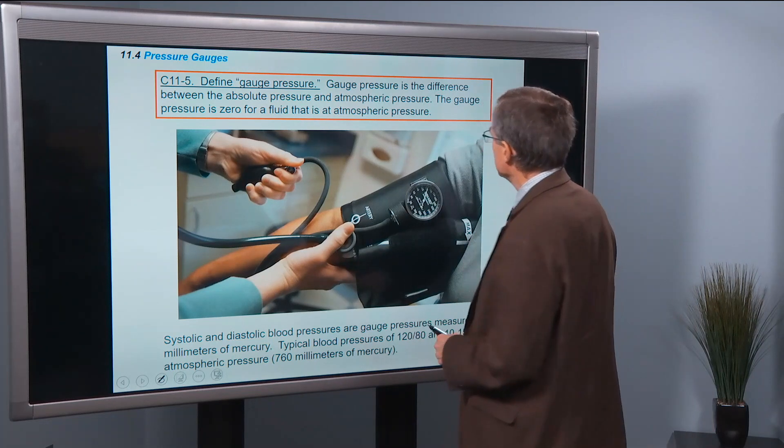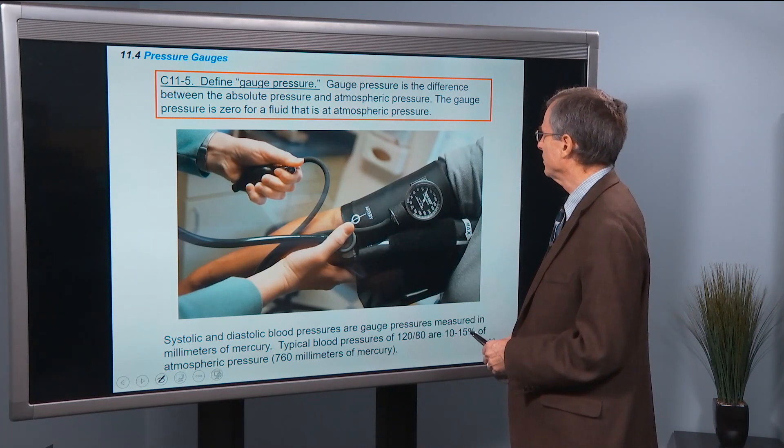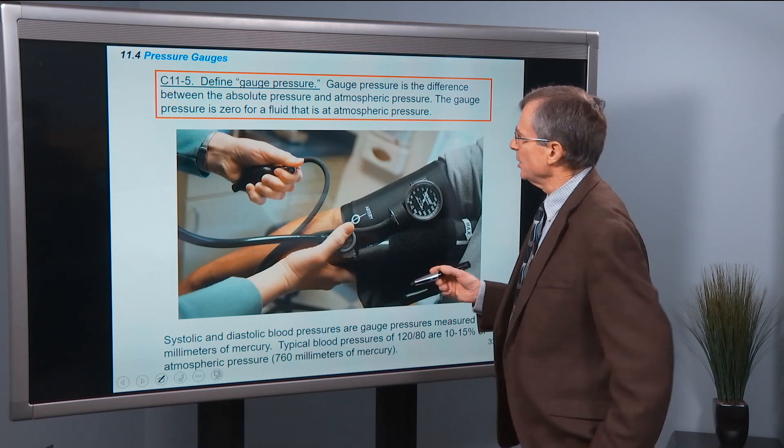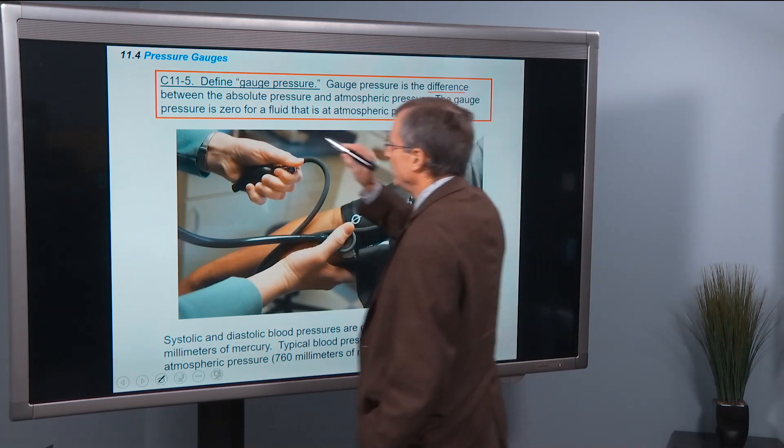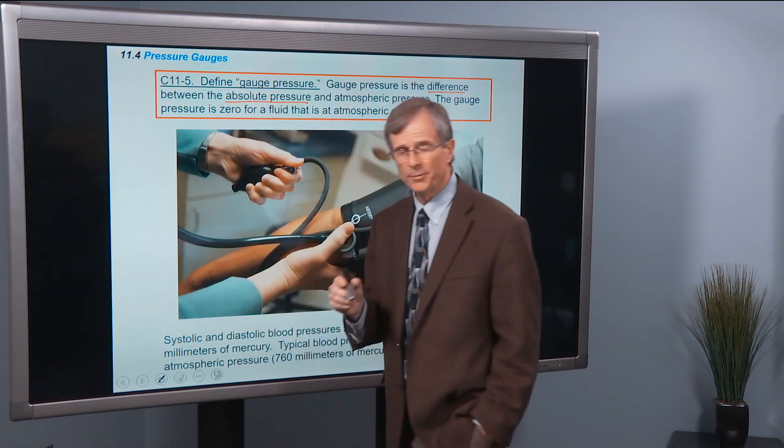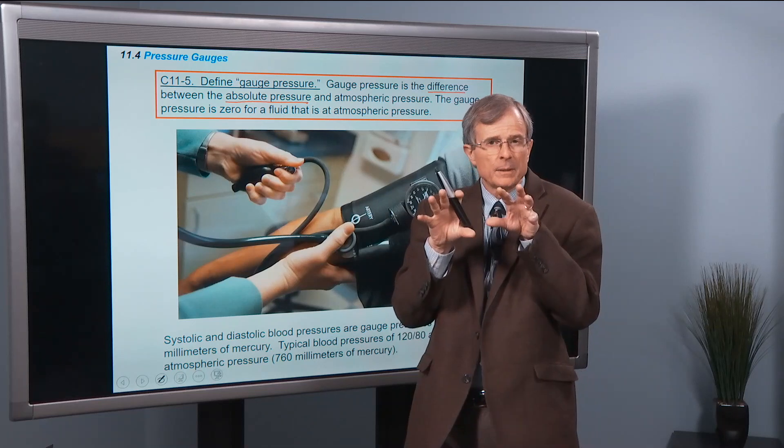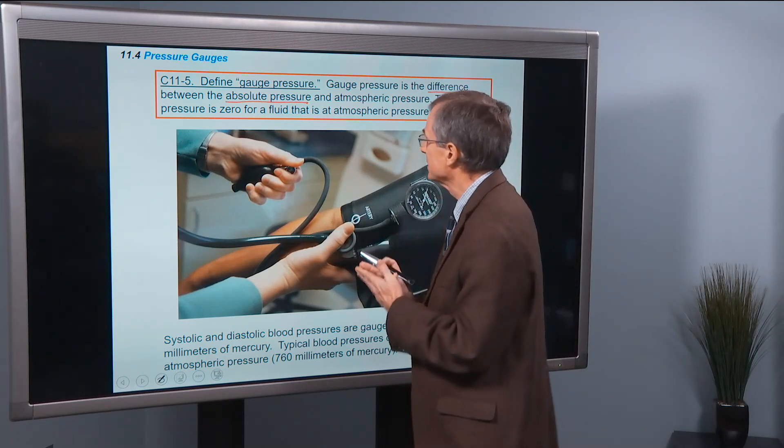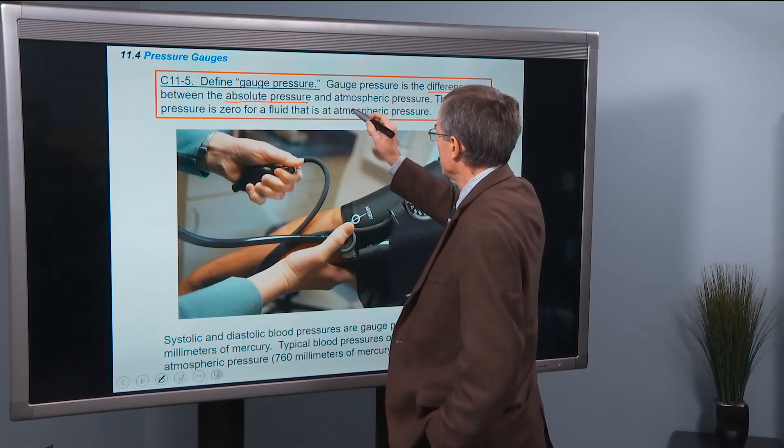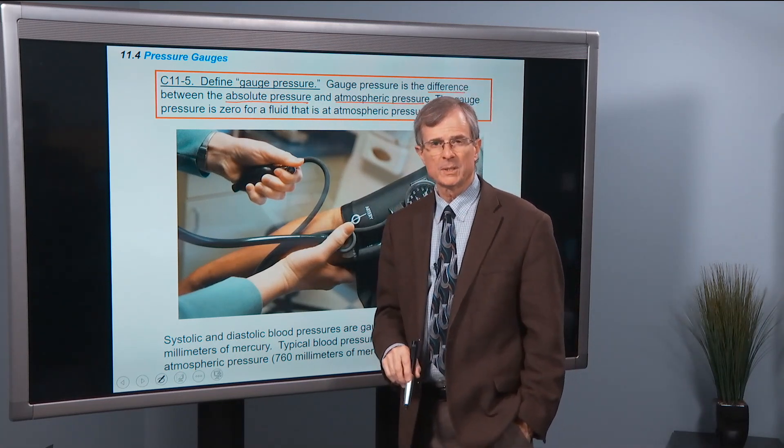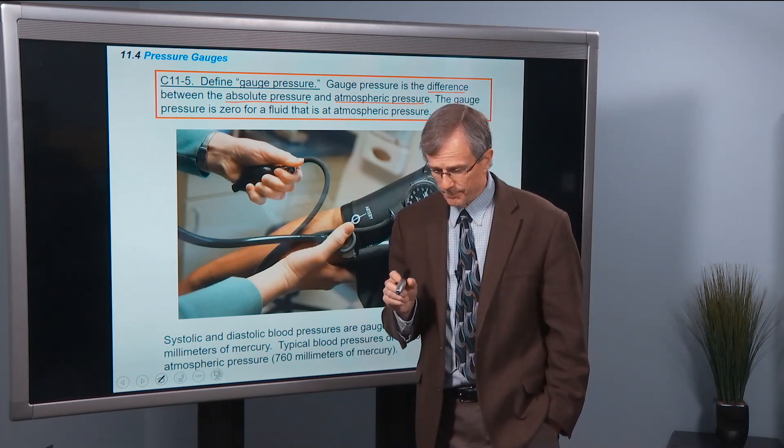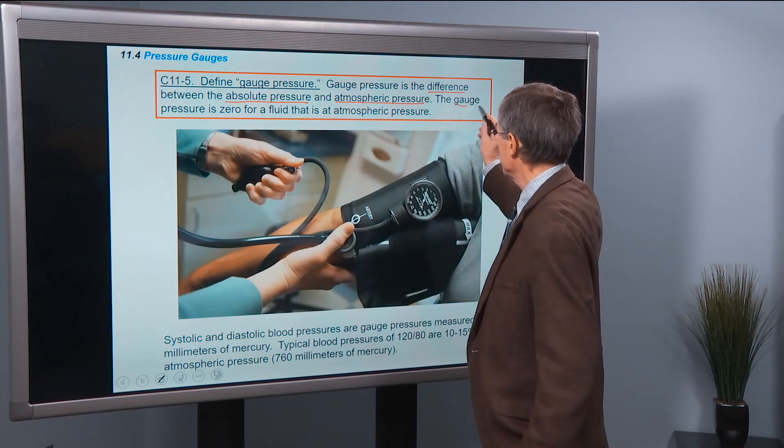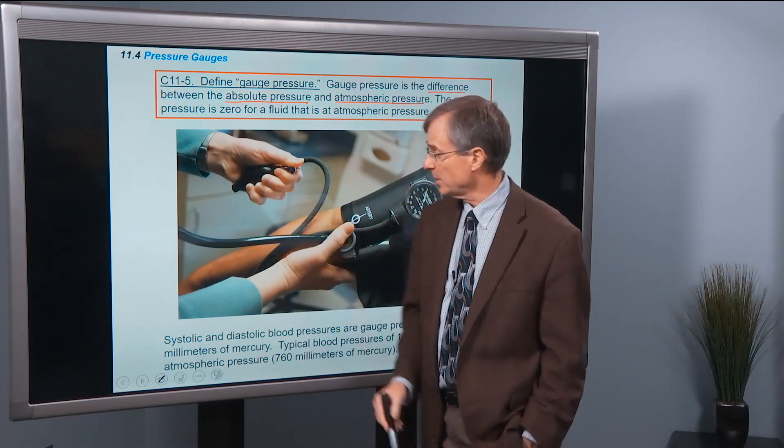Define gauge pressure. Gauge pressure is the difference between absolute pressure and atmospheric pressure. Gauge pressure is zero for a fluid that is at atmospheric pressure. So it's just a difference between absolute pressure, that's what we define as a force per unit area, exerted by the fluid, the gas or the water, on a solid surface perpendicular to that surface. It's that absolute pressure minus the atmospheric pressure, 1.01 times 10 to the fifth pascals. So that if you're, and that difference is zero, the gauge pressure is zero for a fluid that's at atmospheric pressure.